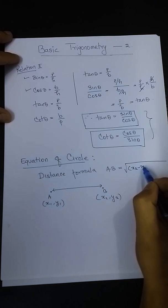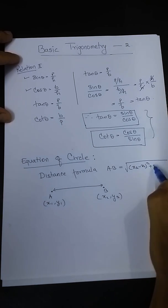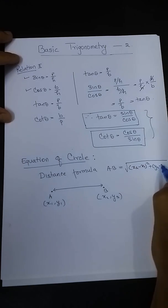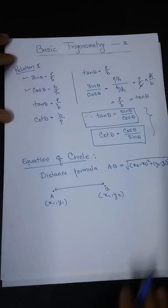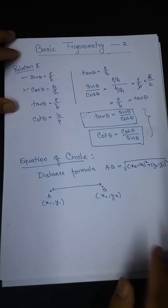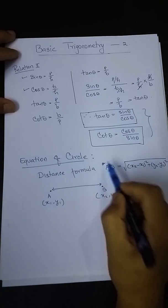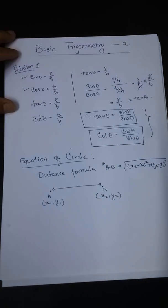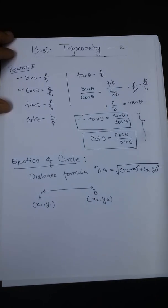The distance formula is: x2 minus x1, squared, plus y2 minus y1, squared — the square root of that gives the distance formula.